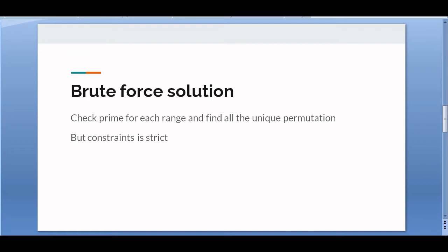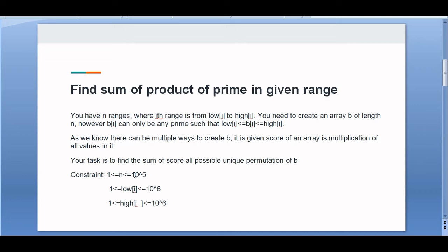For the brute force solution, we would first find the prime numbers in each range and then find all unique permutations. However, checking the constraints, if n is up to 10^5 and the range can go up to 10^6, iterating through all numbers for each range is too slow and won't complete within the time limit.